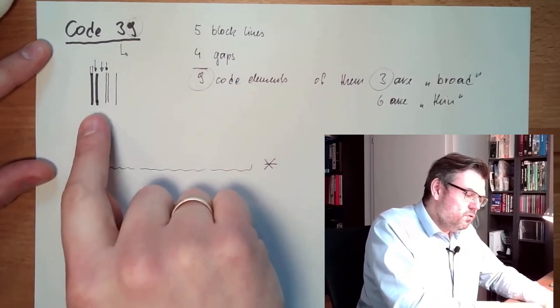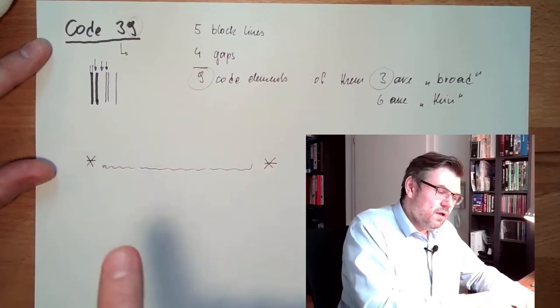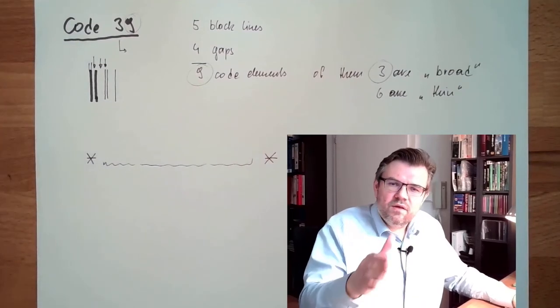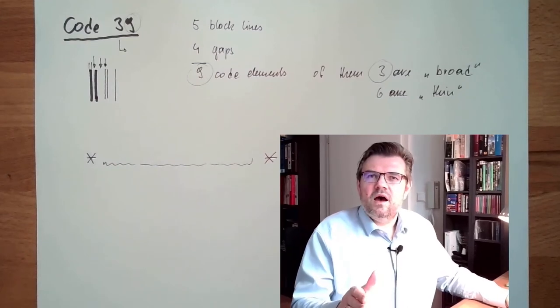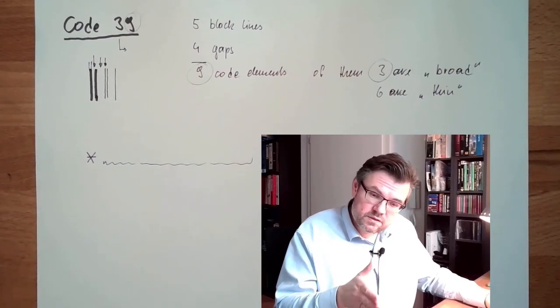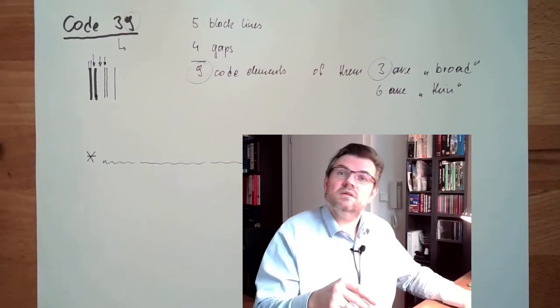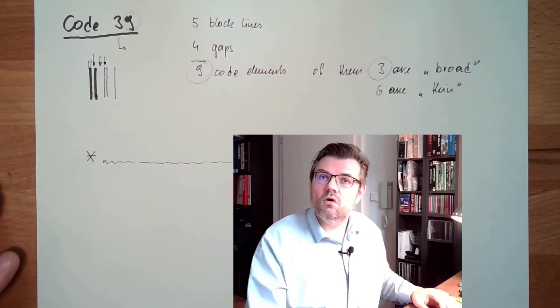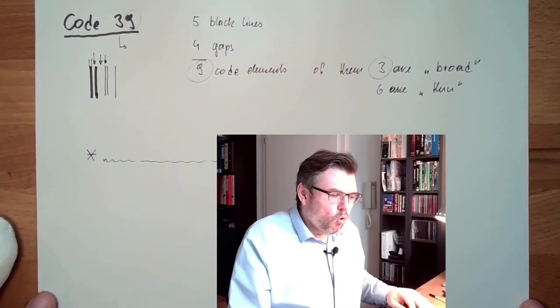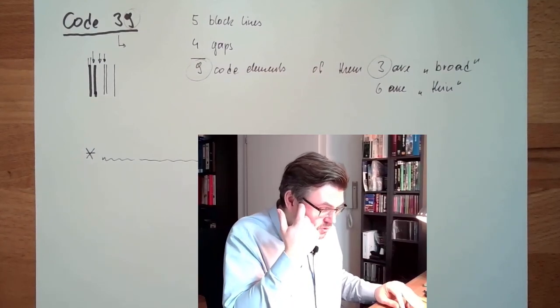Since we are only using two different types of spaces, two width types, this code can also be read if the printing quality is not that accurate. I have to distinguish thick or thin line, but that's it. Some codes work with different thick lines - a thin line, a medium thin line, a medium thick line, and a thick line. This is getting difficult. But here, only two different things I can distinguish rather easy, also if the printing quality is not that good.